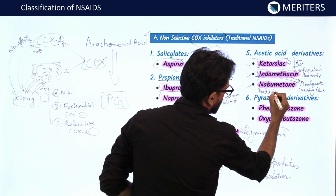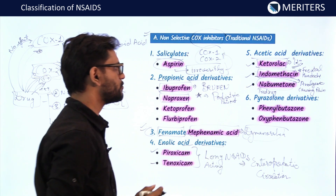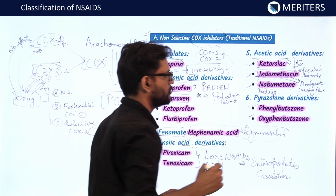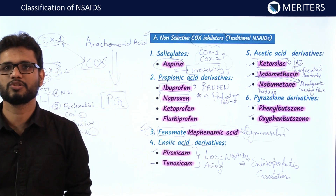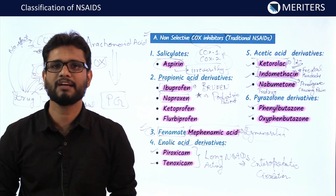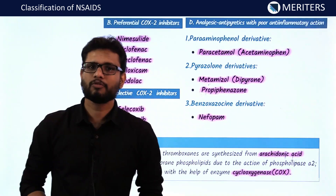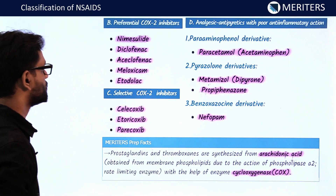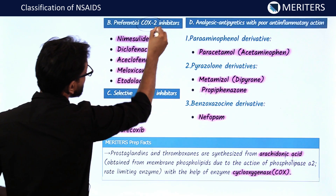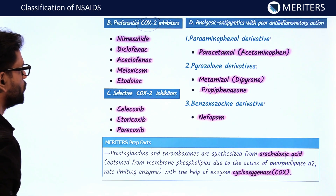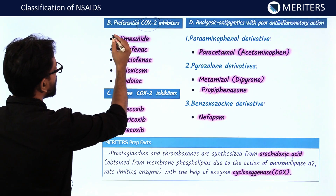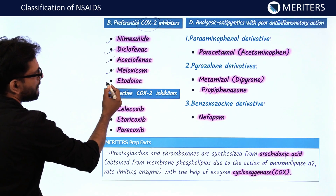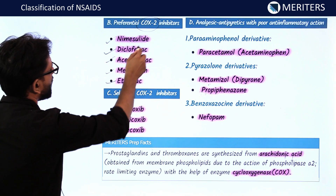The next group is the pyrazolone derivatives, which include phenylbutazone and oxyphenylbutazone. That concludes the first category. The second category is the preferential COX-2 inhibitors — drugs that preferentially inhibit cyclooxygenase-2. Drugs in this category include nimesulide, diclofenac, aceclofenac, meloxicam, and etodolac.